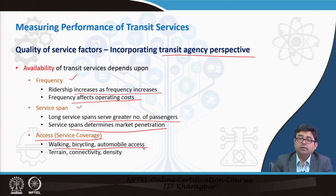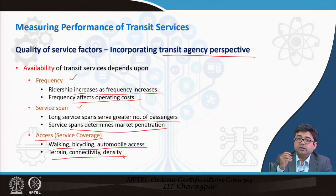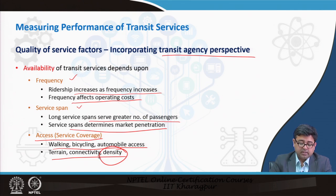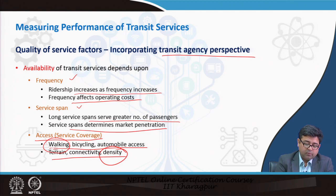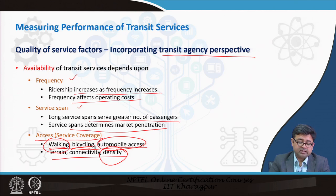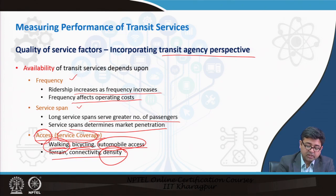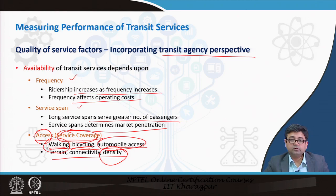The third availability factor is access or service coverage — how well the public transportation system can be reached by walking, bicycling, or automobile access, and how good the terrain connectivity and densities are. Most people who access fixed route public transportation get to stops by walking; some use automobile access where parking is available, and increasingly more people are trying to bicycle. How good the access to the public transportation system is determines how much coverage area it is able to attract.